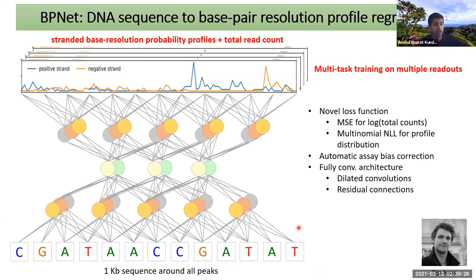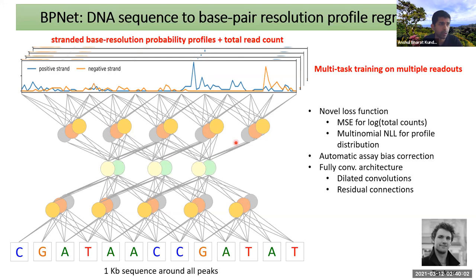With dilated convolutions, to have the final layer see 1000 base pairs would normally require a very large number of layers, but dilated convolutions give an exponential increase in receptive field with far fewer parameters. We also use residual connections — skip connections that allow information to bypass intermediate layers and pass from lower to higher layers directly, enabling more efficient learning especially with deeper models.